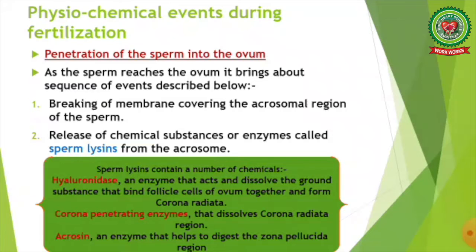The first step is penetration of the sperm into the ovum. As the sperm reaches the ovum, it brings about a sequence of events: breaking of the membrane covering the acrosomal region of the sperm, and release of chemical substances or enzymes called sperm lysins from the acrosome. Sperm lysins contain a number of chemicals. The first is hyaluronidase, an enzyme that dissolves the ground substance binding the follicle cells of the ovum together to form the corona radiata.